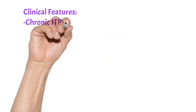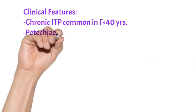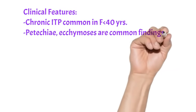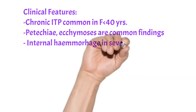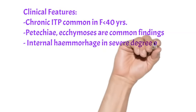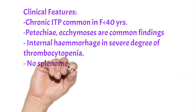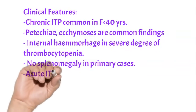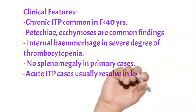The clinical features include chronic ITP presenting predominantly in females under 40 years of age. Various features include petechiae and ecchymosis due to decreased platelet count. Internal hemorrhage is quite common in severe thrombocytopenia, that is platelet count less than 20,000 per cubic millimeter. Splenomegaly usually excludes primary ITP and is not seen in most cases. Acute ITP cases usually resolve in less than six months, and chronic ITP lasts more than six months.